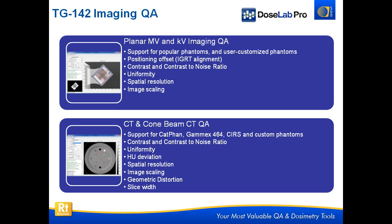We calculate the position and offset for IGRT alignment — you can use the same phantom for positioning and image quality. We calculate contrast and CNR, uniformity, spatial resolution, and image scaling. It's a very complete solution in just basically one button click to load the tool.